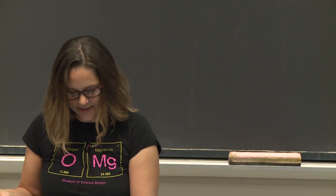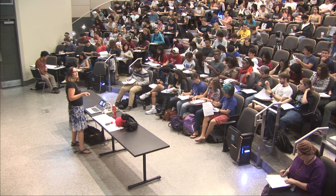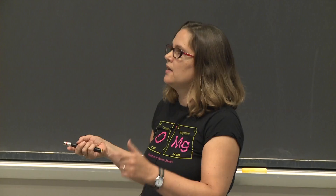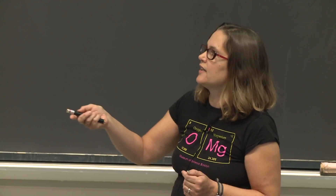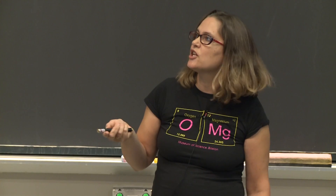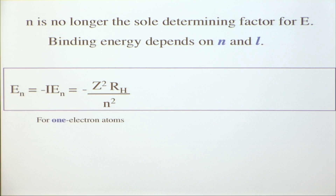Let's review some equations you've seen before — equations will be on the equation sheet, you don't have to memorize them, and the equation sheet for the exam is handed out today. For a one-electron system: binding energy equals minus the ionization energy, equals minus z-squared times R_H (the Rydberg constant) over n-squared. For hydrogen, z is 1, but there are other one-electron ions where you have to account for z.